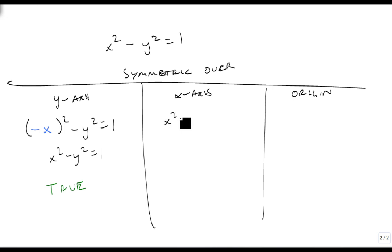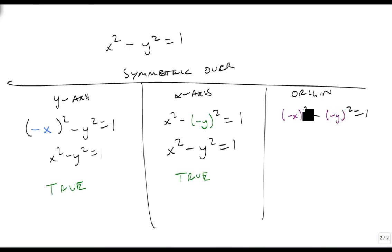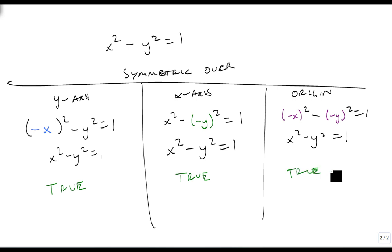For the x-axis test, we replace y with -y. When we square a negative, that negative goes away, so we again get x² - y² = 1 — a true statement. For the origin test, we replace both: (-x)² - (-y)² = 1. When we square both, they both become positive, and we're left with x² - y² = 1. This is also true — symmetric over the origin.